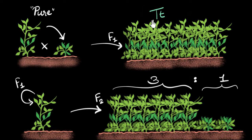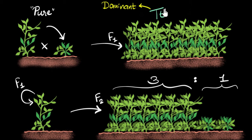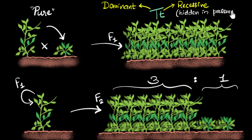This is where Mendel guessed that maybe the presence of the tall trait is dominating, and the short trait is hidden in the presence of the tall trait. He believes the tall trait is dominant — that's why this is called the law of dominance. And the short trait he calls recessive, meaning the trait gets hidden in the presence of the dominant trait. That's why it's not being seen, and that's why what you see is only the dominant trait — the dominant trait is getting expressed.